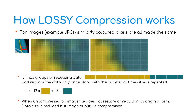With a JPEG, if we zoom in to the coloured pixels, what it does is group similar pixels together or merge them into similar colours, reducing the colour depth. It also finds groups of repeating data — for example, an orangey-yellow and a green — and records each colour only once along with the number of times it appears. So on a particular line we might have 12 of the yellowy-orange and six of the green. When decompressed, the image does not restore to its original form, and data size is reduced but image quality can be compromised.